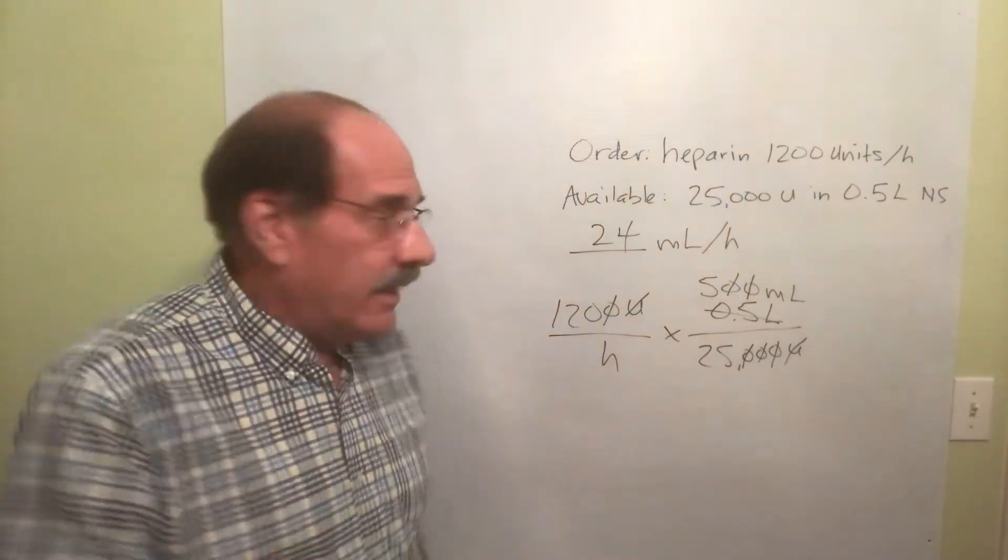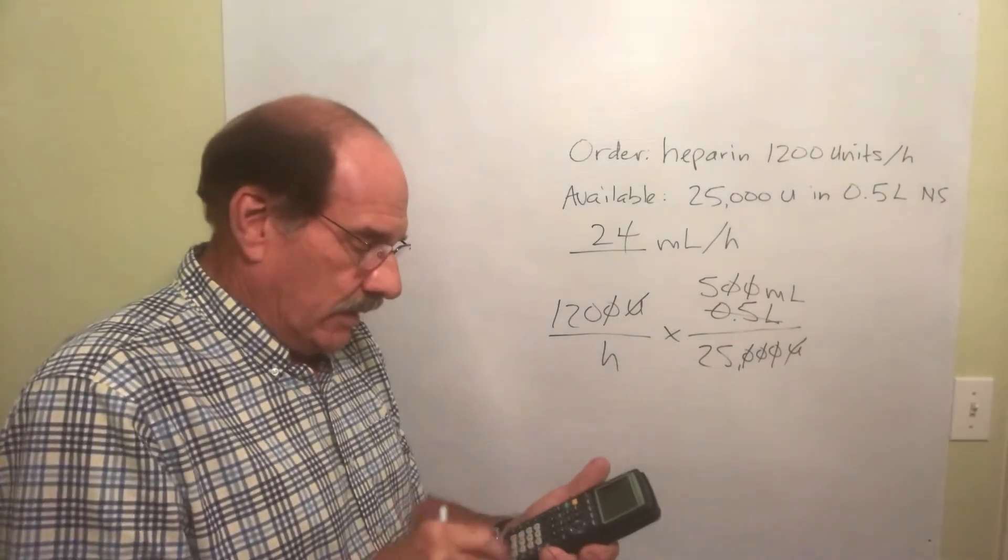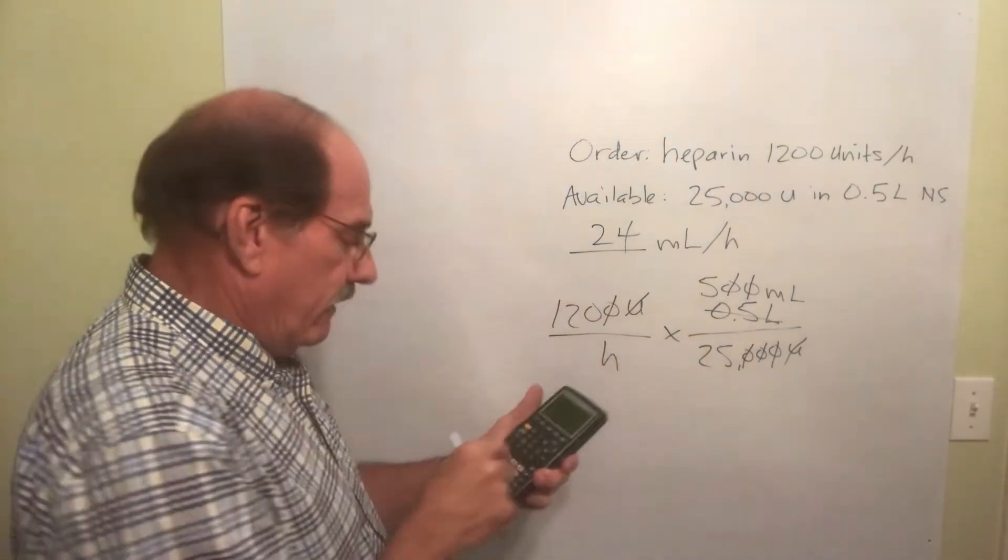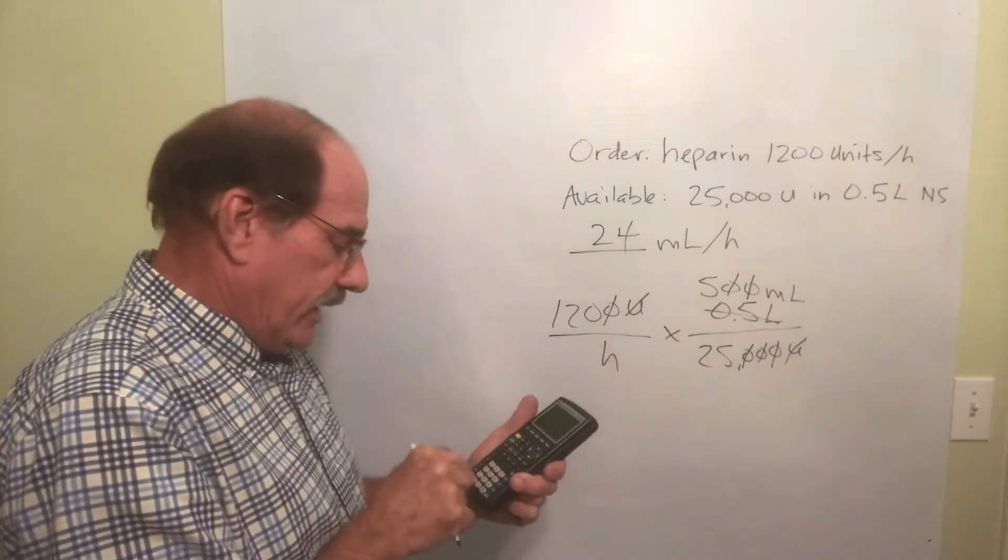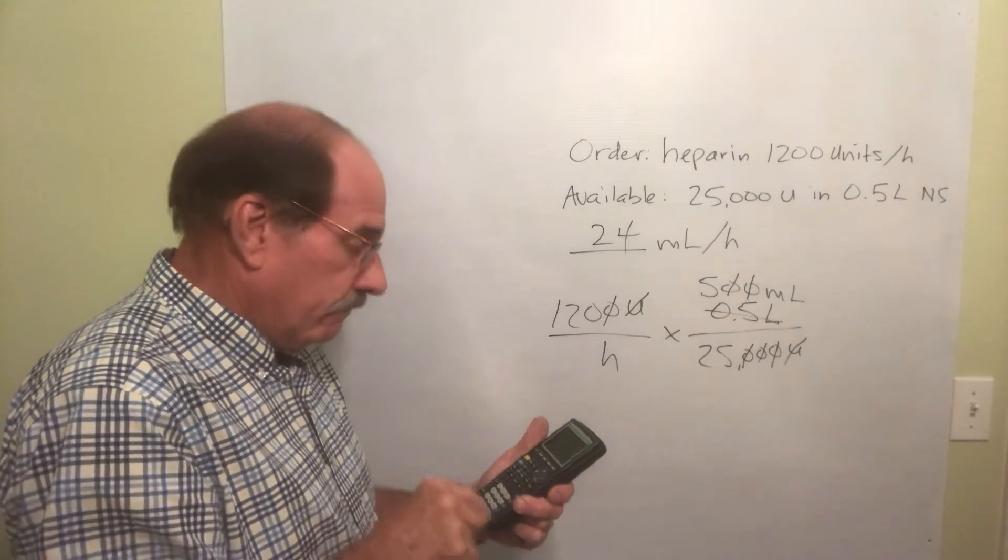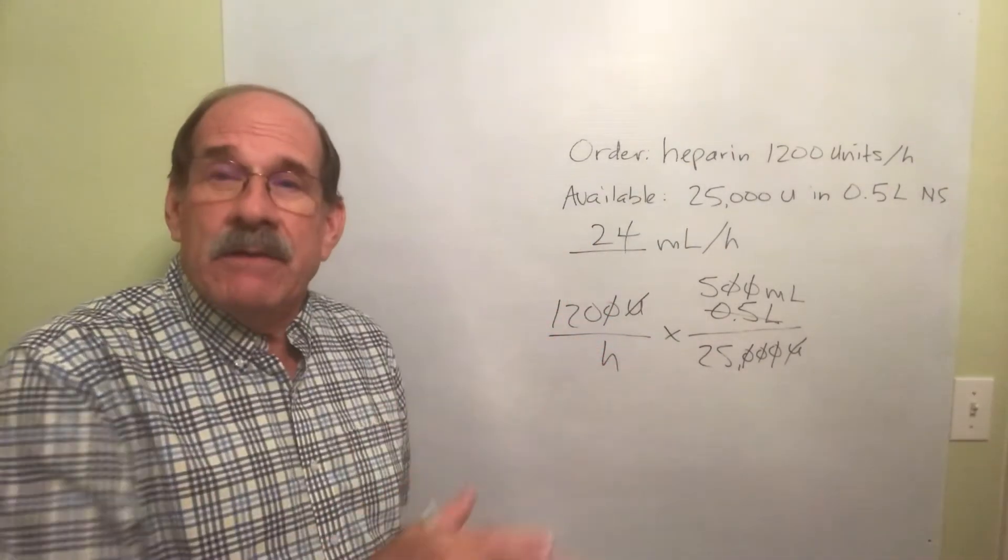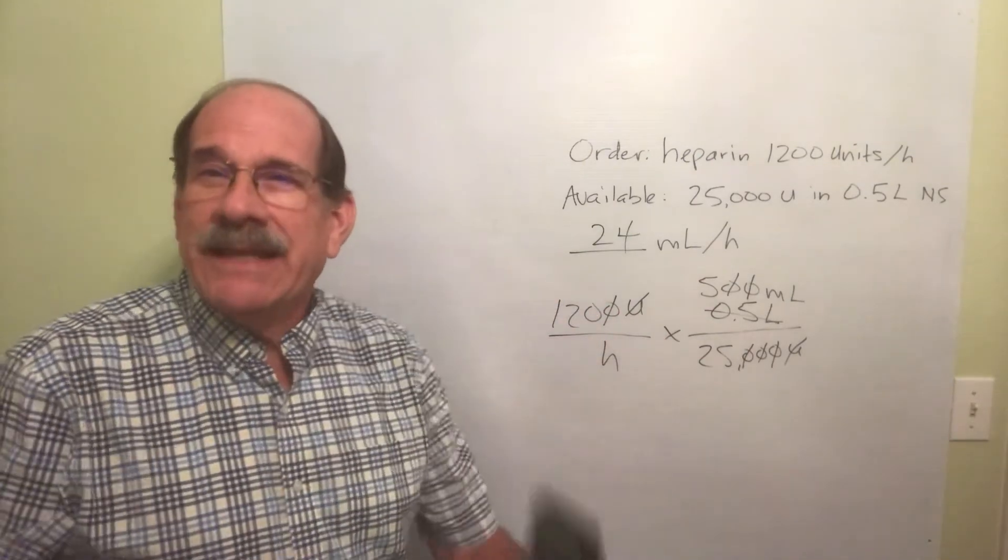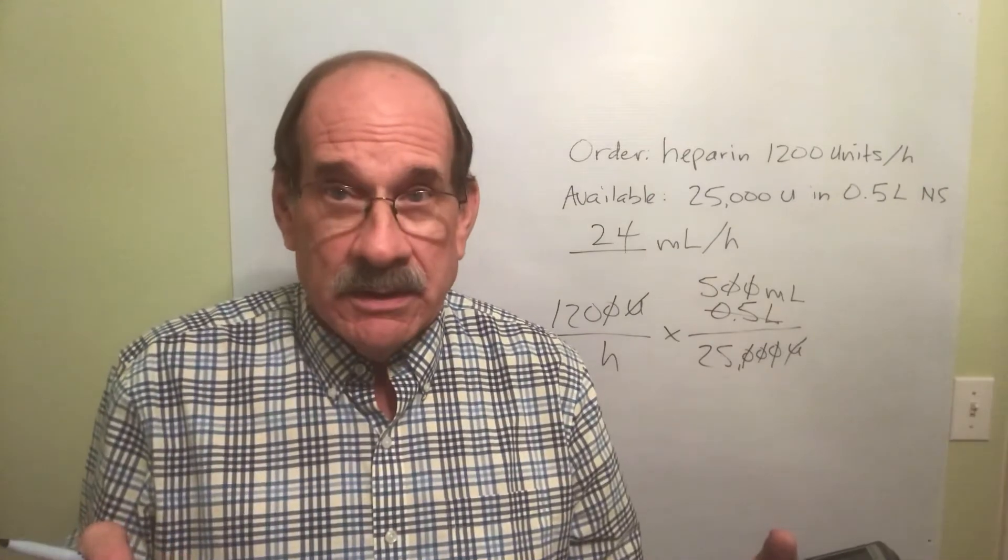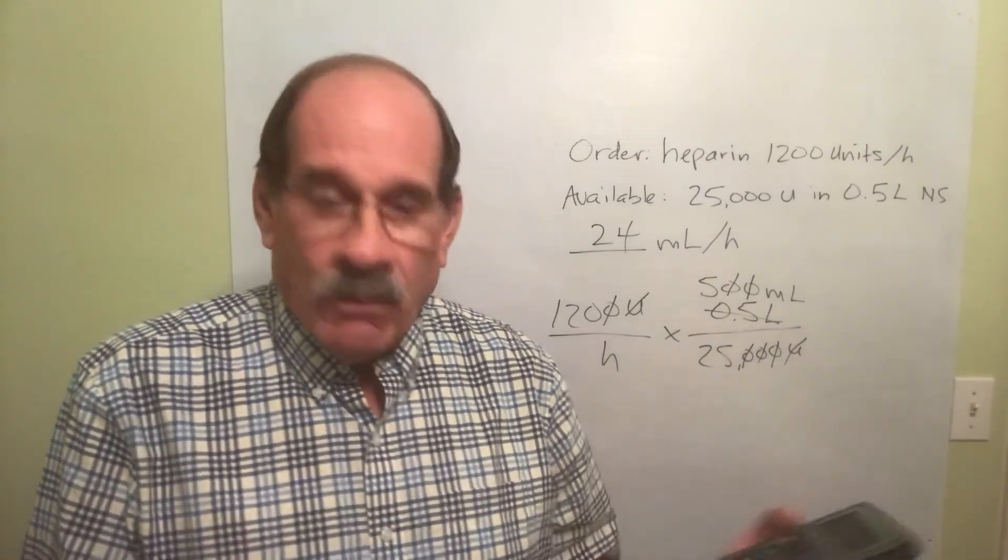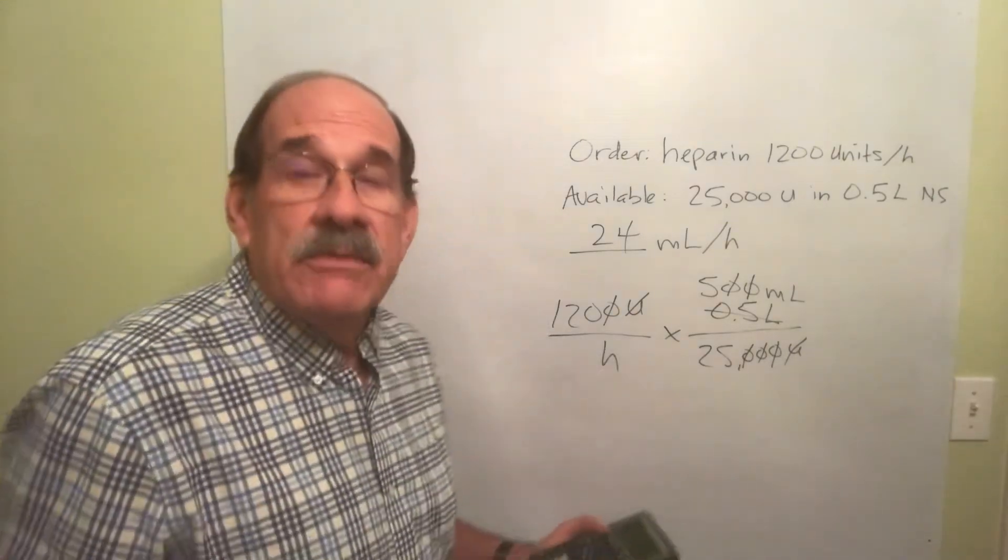Now, if you had done, just to prove it to you, the whole number, 1,200 times 500, then divided by 25,000, I get the same answer. See? But it's better if you cancel out the zeros. If the canceling zeros gives you problems, don't do it. It's just handy. It's quicker. It saves finger motion. And it saves error.